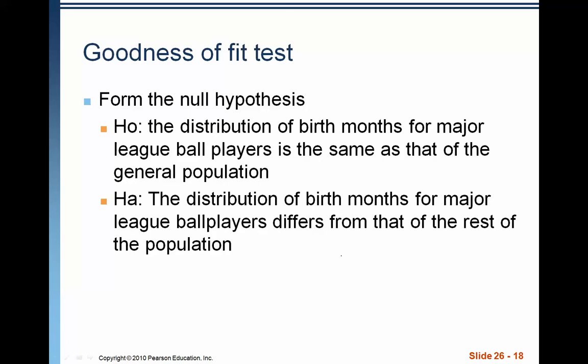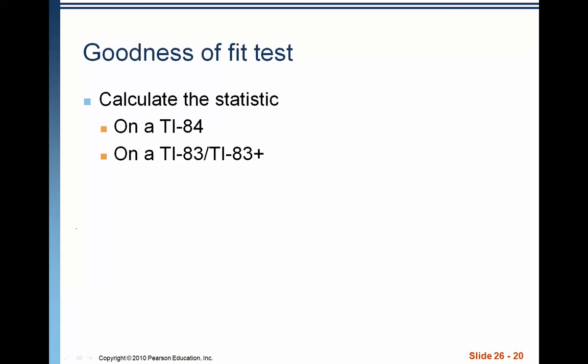So for our ball player example, the null hypothesis is that the distribution of birth months for major league ball players is the same as that of the general population. Notice that our hypothesis is not in symbols. In a chi-square test, our null hypothesis is always written out. But notice that it has the same general format as our other ones. This null hypothesis very much sounds like an equality statement. We're saying that the distribution is the same, is equal to that of the general population. And the alternative is that the distribution of birth months for major league ball players differs from that of the rest of the population. Notice that that makes a does not equal statement. So there's our hypotheses. Let's go ahead and do the statistics.